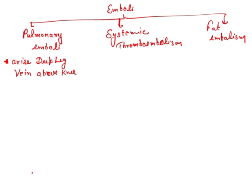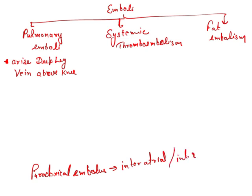There is something called paradoxical embolism. It is a rare embolism that can pass through intra-atrial as well as interventricular defects. Basically, from defects of the ventricle or atrium, the embolus can pass through and go to the systemic circulation. That particular kind of embolism is known as paradoxical embolism — it passes through either inter-atrial or interventricular defects and goes to the systemic circulation.